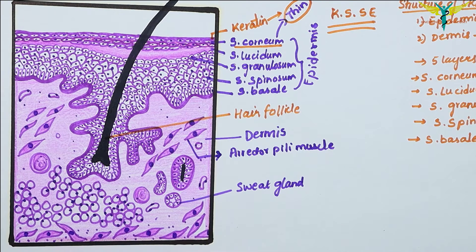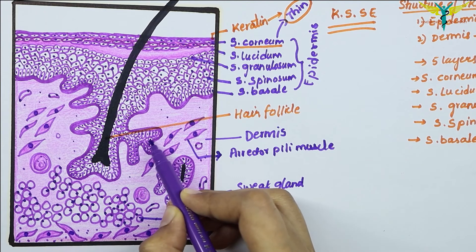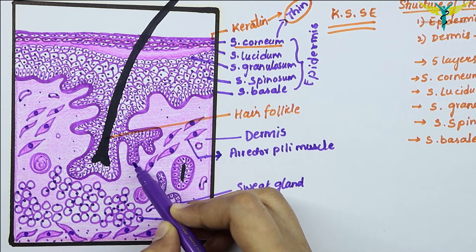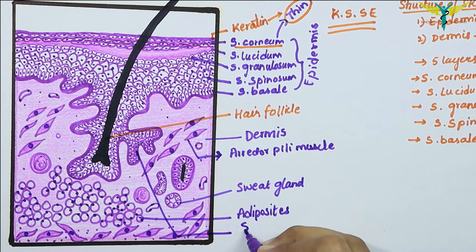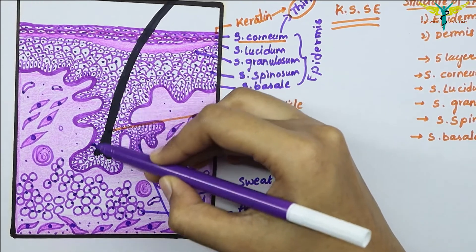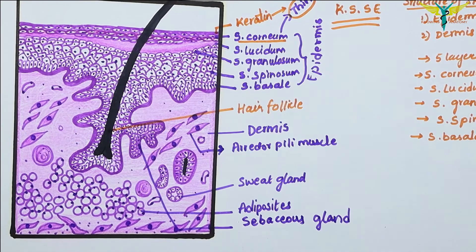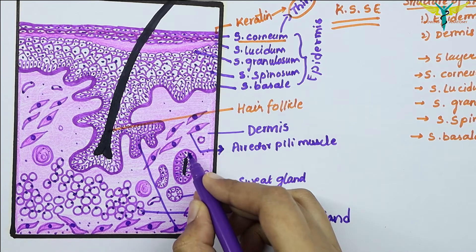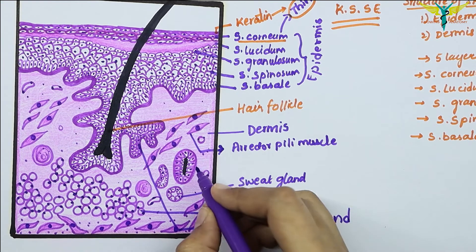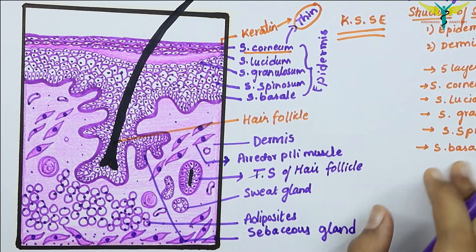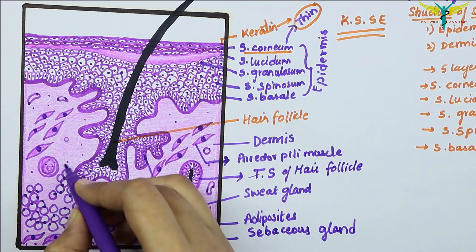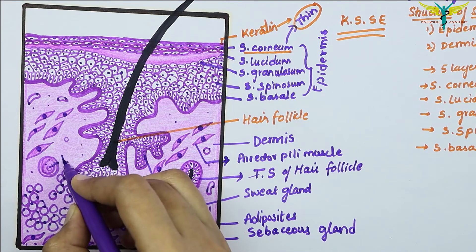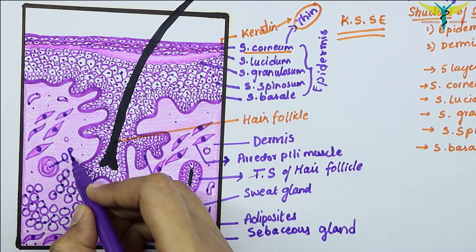In the dermis there is a presence of many adipocytes. This gland present beside the hair follicle is the sebaceous gland. This is the longitudinal section of the hair follicle, whereas this is the transverse section of the hair follicle. We can also note the presence of blood vessels, the erector pili muscles, and the dermal papillae present in the dermis.